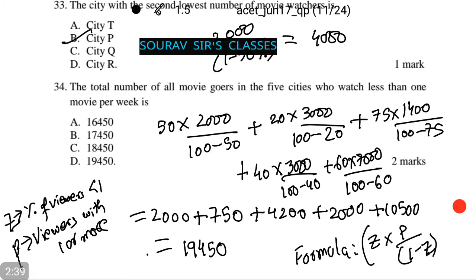Thus the calculation looks like as follows. Notice the formula is Z into P by 1 minus Z, where Z is the value in the first column that we had, which is percentage of viewers watching less than one movie a week on an average, and P is the value in the second column that we had as viewers watching one or more movies a week. This is what the calculation will be, and upon that we find option number D corresponds with our answer, that is 19,450.